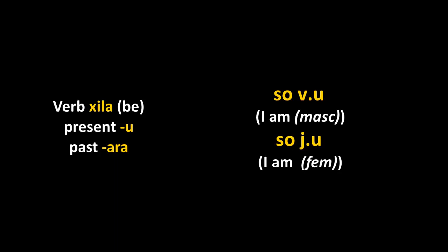Let's take the verb hila, 'to be.' In the present form it's irregular — it's u — and in the past it's ara. But this verb requires a prefix in the present and the past, so it can't be used alone. If I say 'I am,' I have to say suovu if I'm a man, but suoyu if I'm a woman, because the V prefix is masculine and the Y prefix is feminine. So even though the pronoun is the same, a woman says it differently from a man.